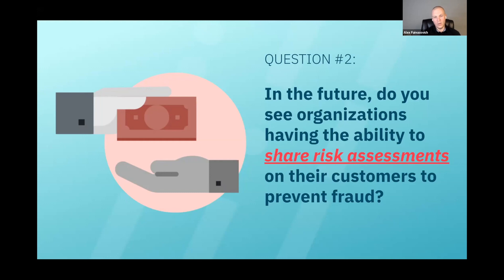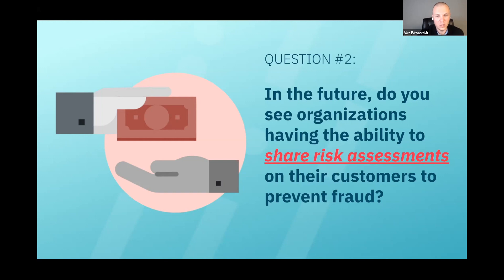I think eventually a lot of fraud prevention practices, especially around onboarding, will start using some type of global insights to actually be able to tell whether this entity already conducted any type of fraud or abuse anywhere else. So maybe you'll think twice before onboarding them, or you'll decide to onboard them but give them more limited access to their account. There are a lot of different ways you can use a consortium.